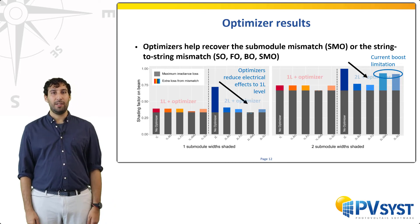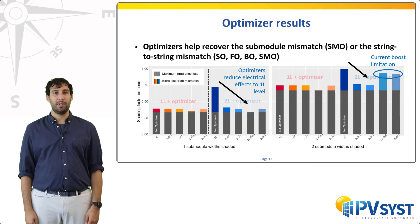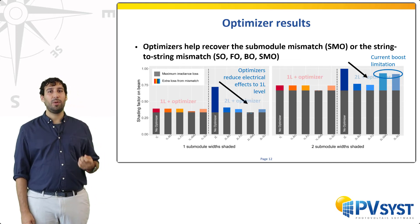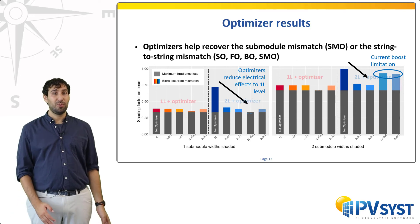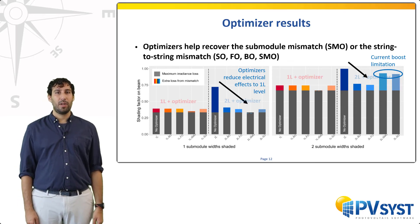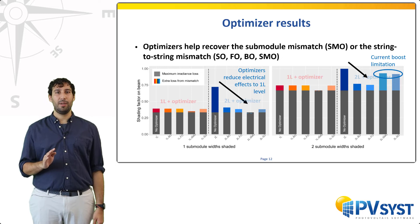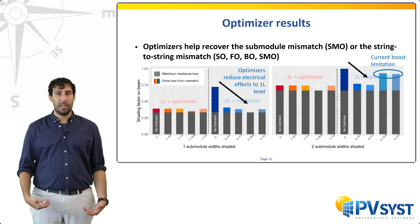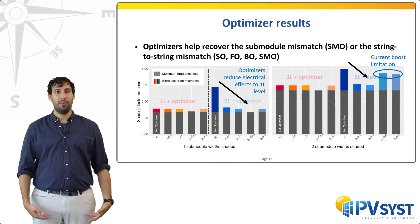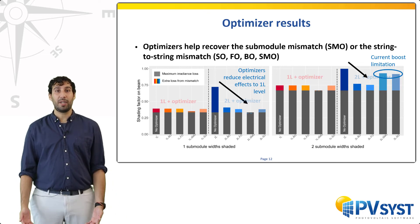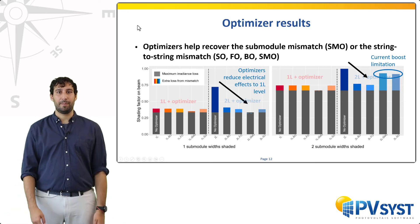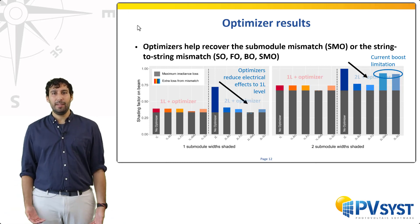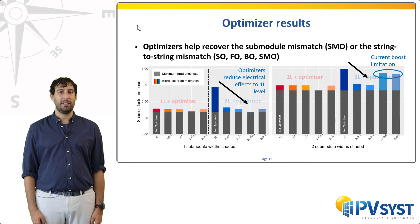Finally, once the shadings and therefore the mismatch become important — for example when two sub-modules are shaded — the optimizers may start to show their limits. You can see this for cases 2L-SMO and 2L-SO. This is because there is a limit to the current boost and voltage boost that the optimizers can provide, and the optimizers used in this study hit that limit. In these cases, the mitigation is not as effective.